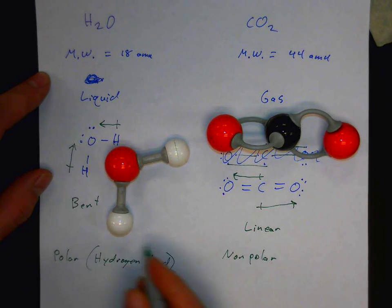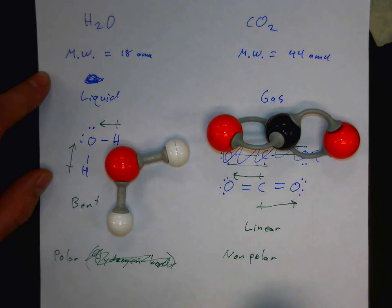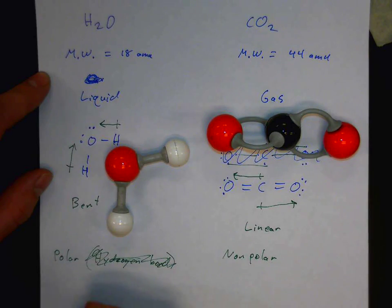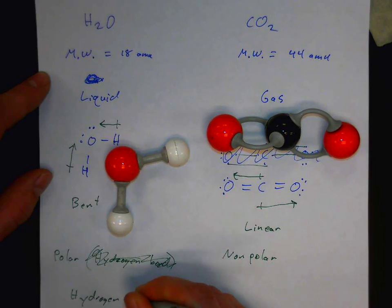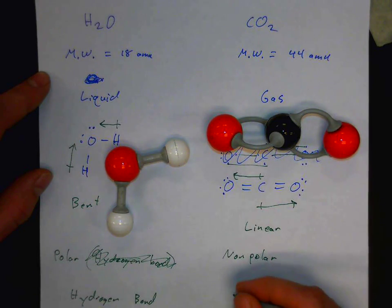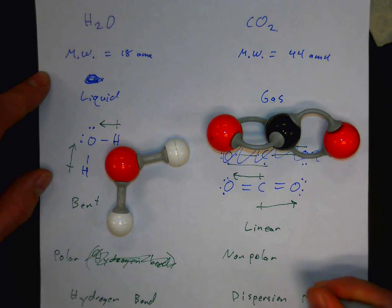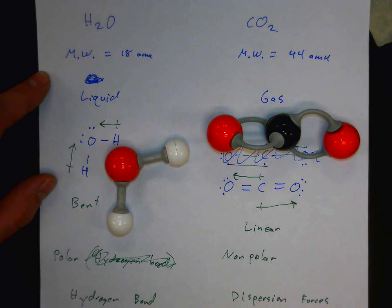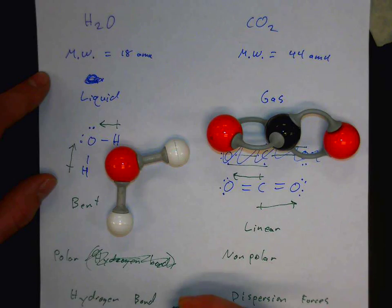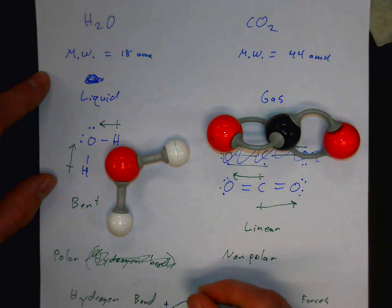Now let's think about what types of intermolecular attractions occur between these molecules. Water's polarity results in a special type called a hydrogen bond, while nonpolar molecules can only have the weakest type of attractive force: dispersion forces, also called London dispersion forces. A hydrogen bond is an especially strong dipole that occurs when hydrogen is covalently bonded to oxygen, nitrogen, or fluorine. The small hydrogen bonded to a strongly electronegative element causes electron density to be pulled far toward the oxygen, resulting in a strong positive charge on the hydrogen and a strong negative charge on the oxygen.